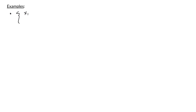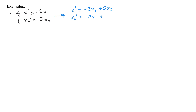Now let's look at an example with two equations and two functions: x1' = -2x1 and x2' = 3x2. Rewriting to include all terms: x1' = -2x1 + 0·x2 and x2' = 0·x1 + 3x2. In matrix notation this is x' = [[-2, 0],[0, 3]] · x.